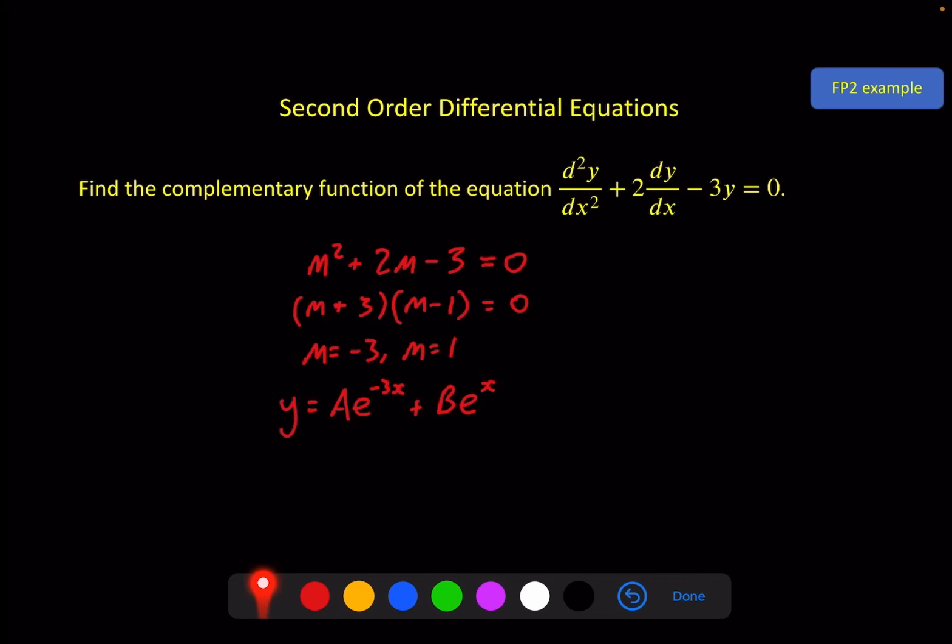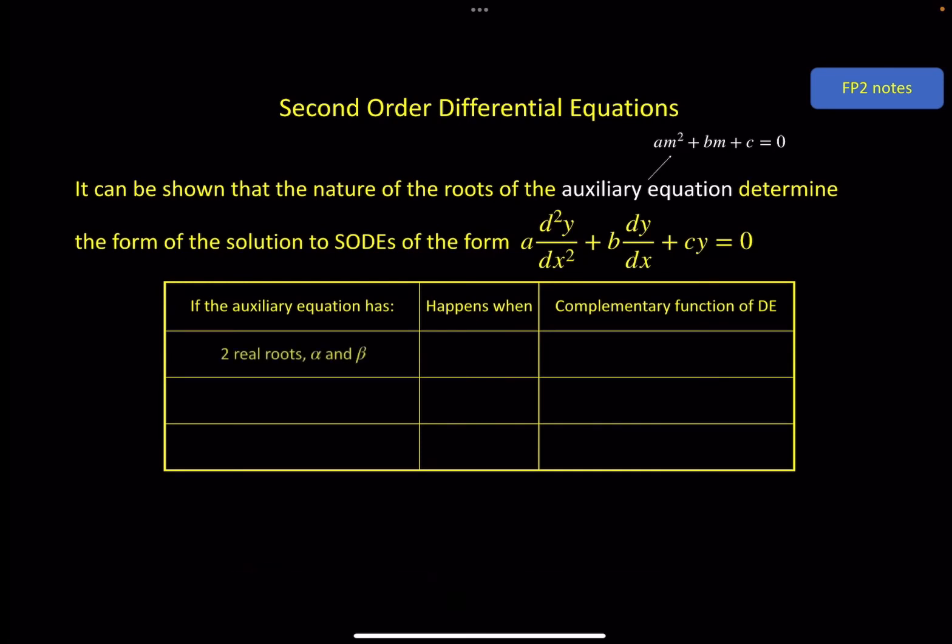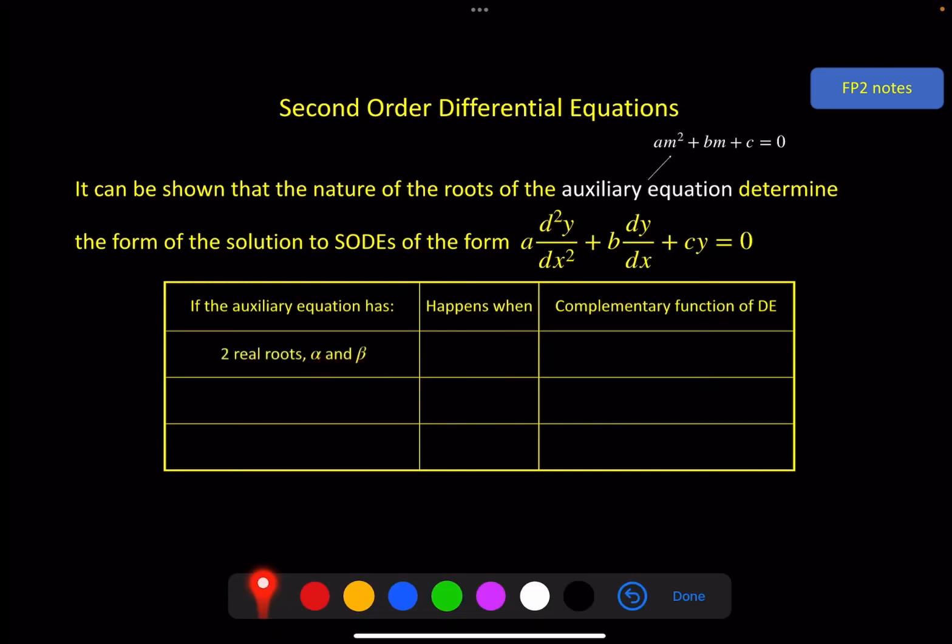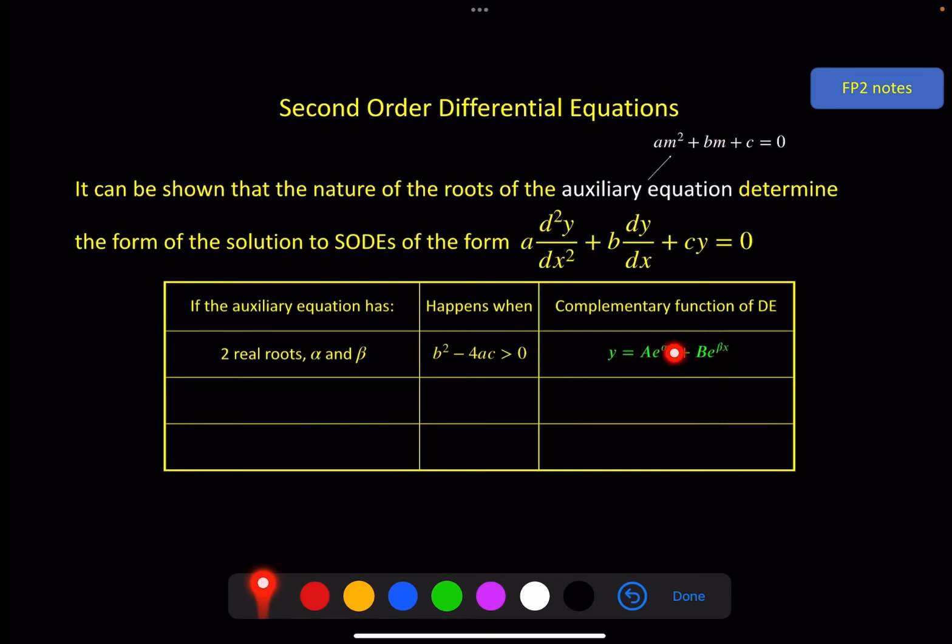On the other hand there are two other forms you need to be familiar with. Here I've said it can be shown, that's a quick way of saying I'm not going to show it but you can go and find out for yourself if you'd like to, that the nature of the roots of the auxiliary equation determine the form of the solution. So if it has two real roots α and β, which is what we just did on the previous screen, that happens when b² - 4ac > 0.